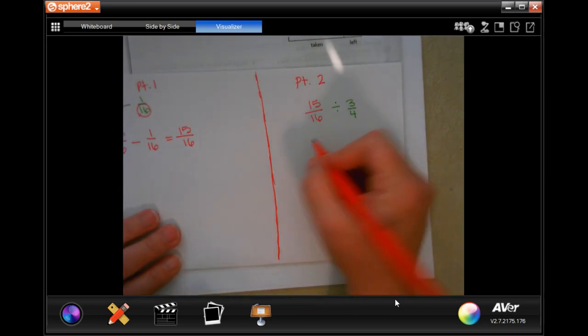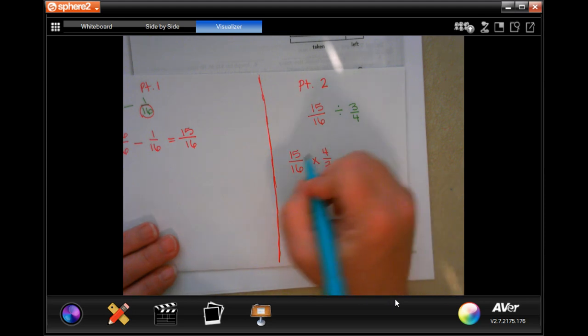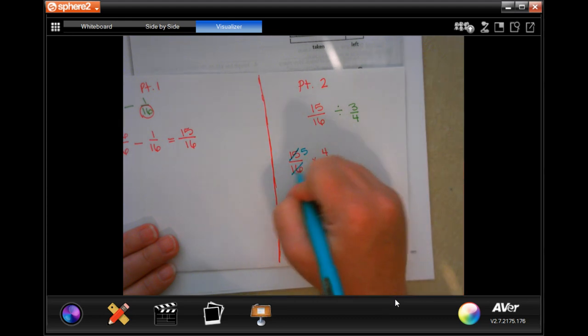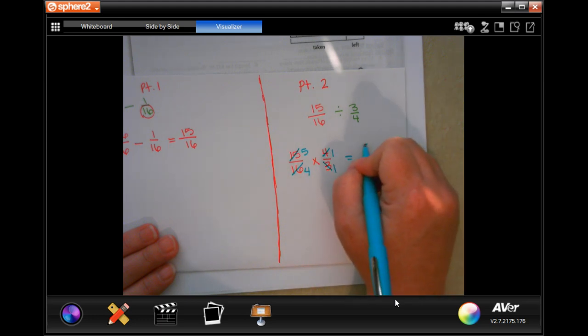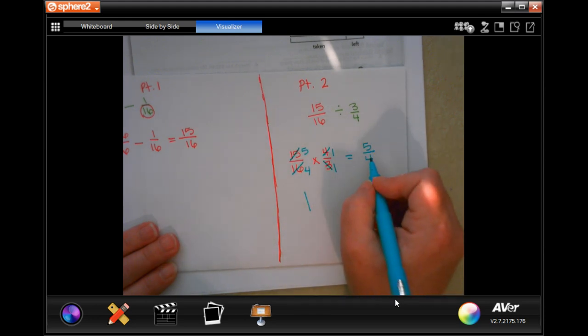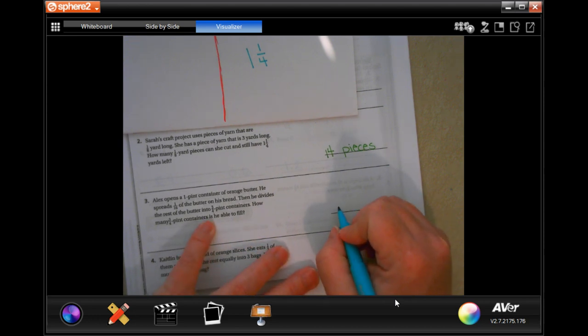Now I have 15 over 16 divided by ¾. So I'm going to keep, I'm going to change, and I'm going to flip. Now, 3 goes into 3 once, and it goes into 15 five times. 4 goes into 16 four times, and it goes into 4 once. So now I have 5 over 4. The top is bigger than the bottom, so how many times does 4 go into 5? It goes in one time, and then I would have 1 left over, and my denominator is 4. So 1 and 1 quarter, 1 and 1 container.